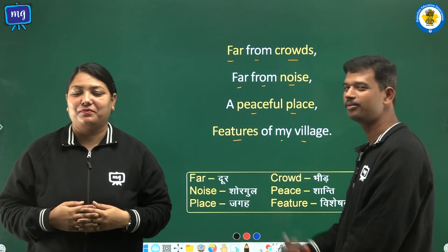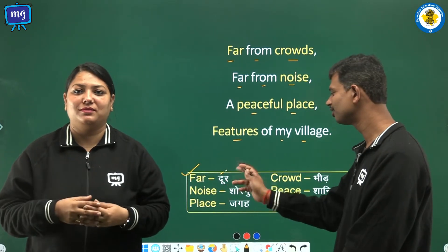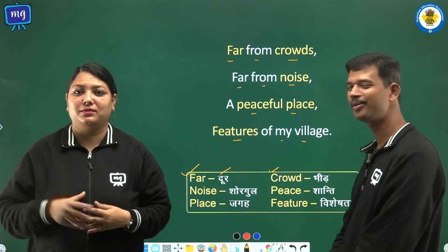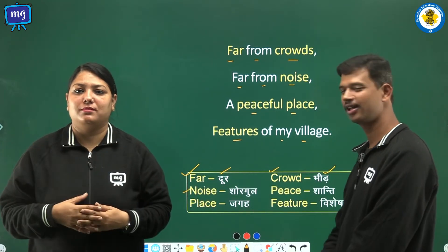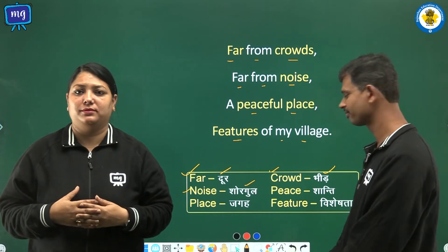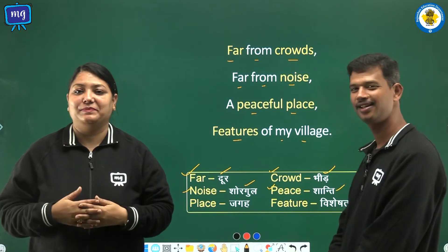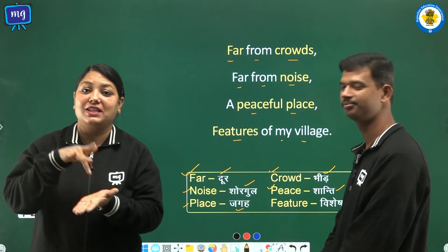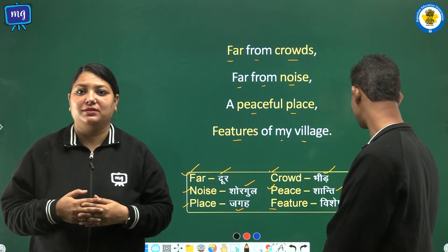Let us see the word meaning. Far — far means Dur. Crowd — crowd means Bheed. Noise — noise means Shorgul. Peace — peace means Shanti. Place — place means Jagah. Feature — feature means Visesta.